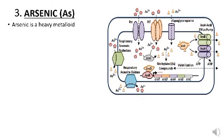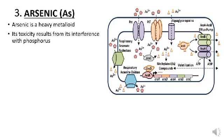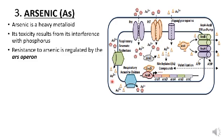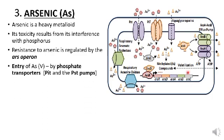Next is arsenic. Arsenic is a heavy metalloid and its toxicity results from its interference with phosphorus. Resistance to arsenic is regulated by the ARS operon. The ARS operon consists of five genes: ARS-R, ARS-D, ARS-A, ARS-B, and ARS-C. The entry of arsenic into the bacterial cell is by using phosphate transporters which are PIT and PST pumps.